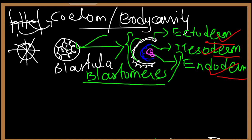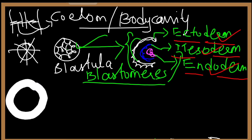So: ecto = outer layer, endo = inner layer, meso = the middle part. These are the three layers formed during embryonic development. The space present within the mesoderm is called the coelom or body cavity.